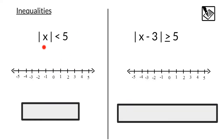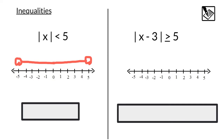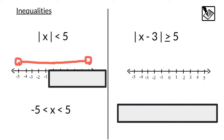Moving on to inequalities. Here we have absolute value of x is less than 5. That's basically telling us that x is less than 5 spaces away from 0. That can be visualized on our number line — it's less than 5 spaces to the left and less than 5 spaces to the right. So when we have a less than inequality, we end up getting a range of values between two numbers. We can see that x is between negative 5 and 5: bigger than negative 5, less than 5.